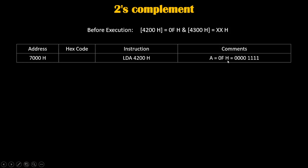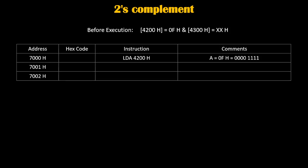The accumulator will become 0fh — a single zero in hexadecimal is equivalent to four zeros in binary, and a single f in hexadecimal is equivalent to four ones in binary. LDA 4200h is a 3-byte instruction, so it will take three memory locations of our program. The hex code of LDA is written at 7000h, and 4200h is written with 00 first, then 42.